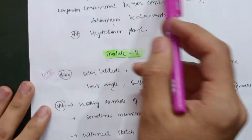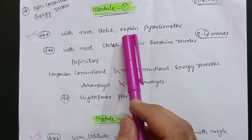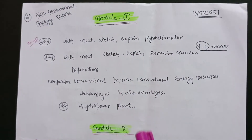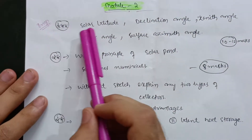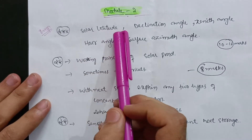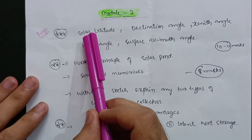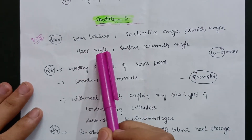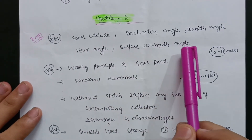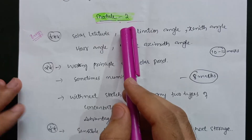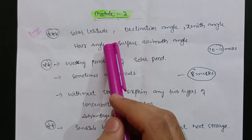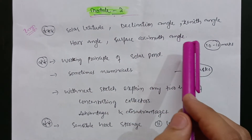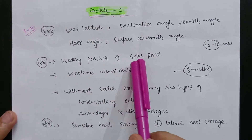Sometimes both questions — pyrheliometer and sunshine recorder — will come together for 20 marks. In Module 2, one super important question is definitions: solar latitude, declination angle, zenith angle, hour angle, and surface azimuth angle. This is the most important question in Module 2. Go through this theory content and you can easily score 10 to 12 marks for this definition part.